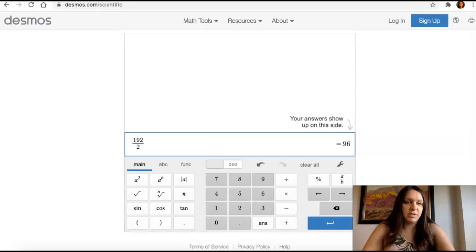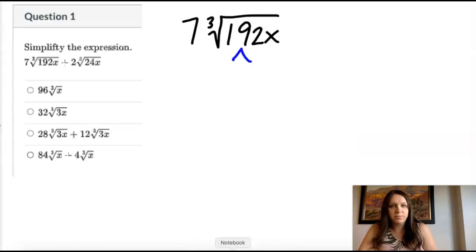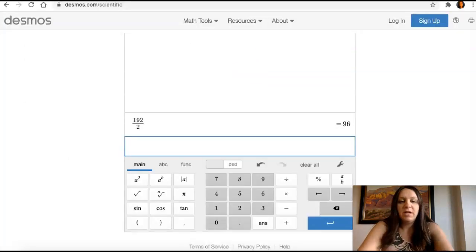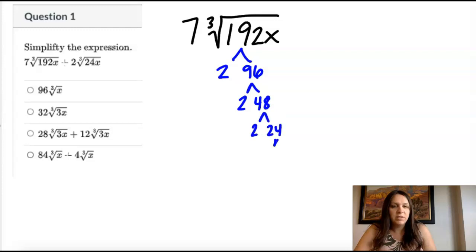So 192. I don't know. I always start with dividing by two. It's 96 and two. There's my pen. There we go. Two times 96. And then we're just going to keep going. So I know 96 is even. So I'm going to divide by two. Two and 48. And keep going. Two and 24. Two and 12. Two and six. Two and three. So that is a lot of twos.